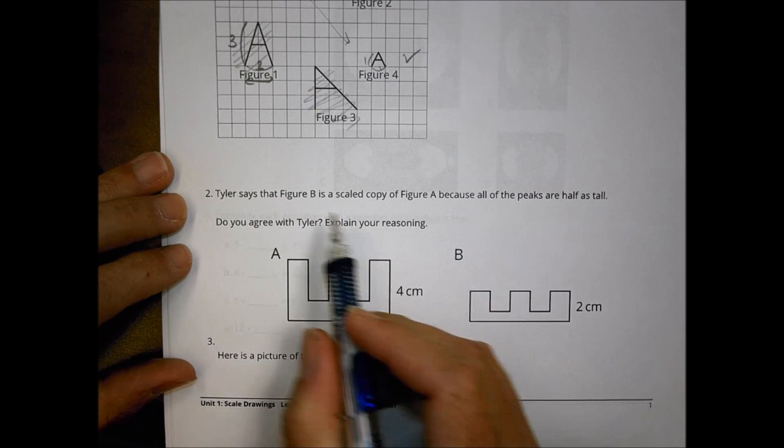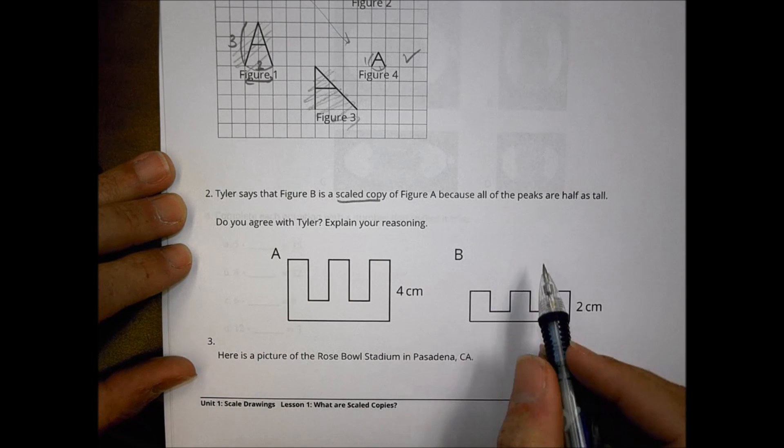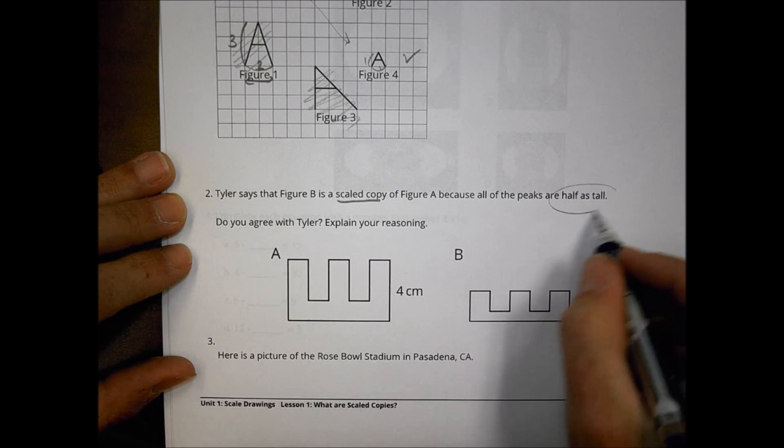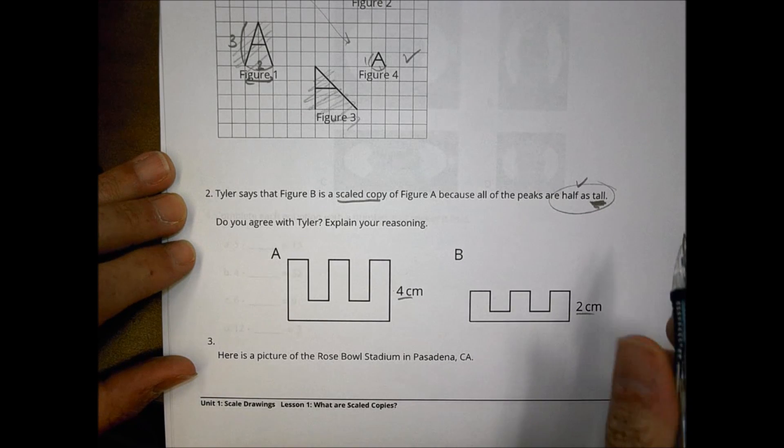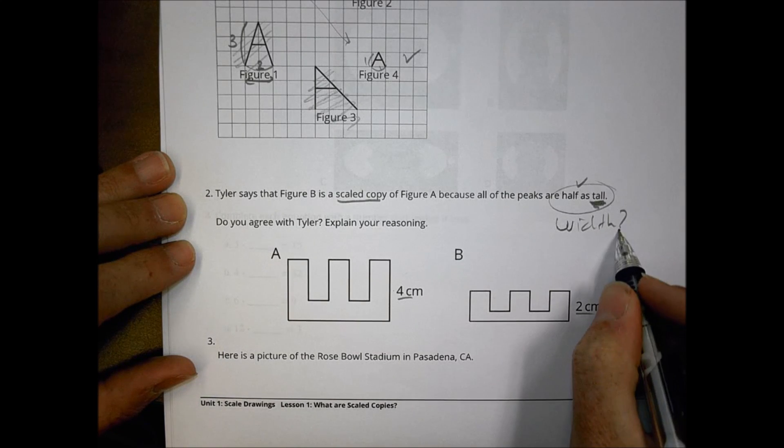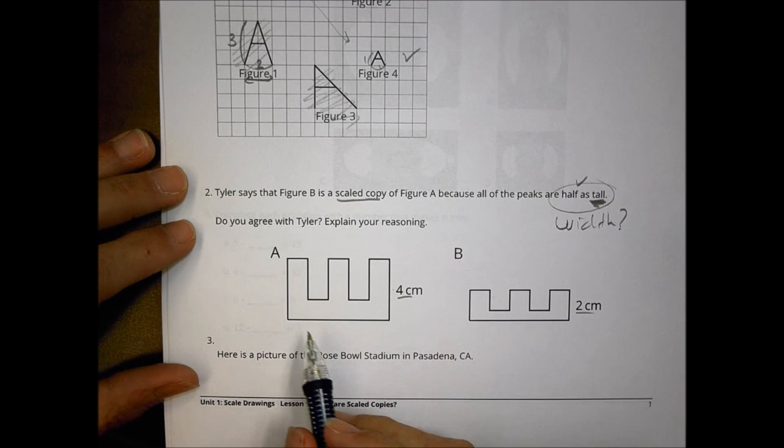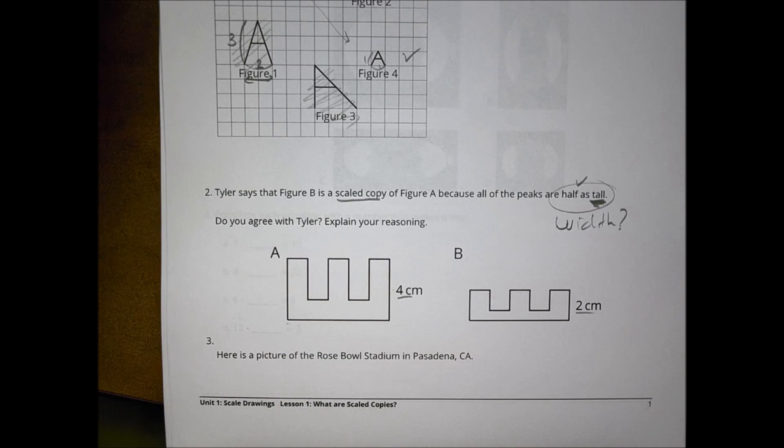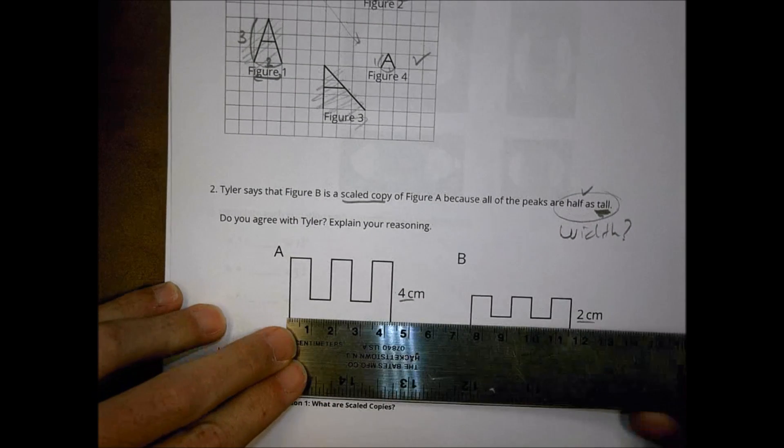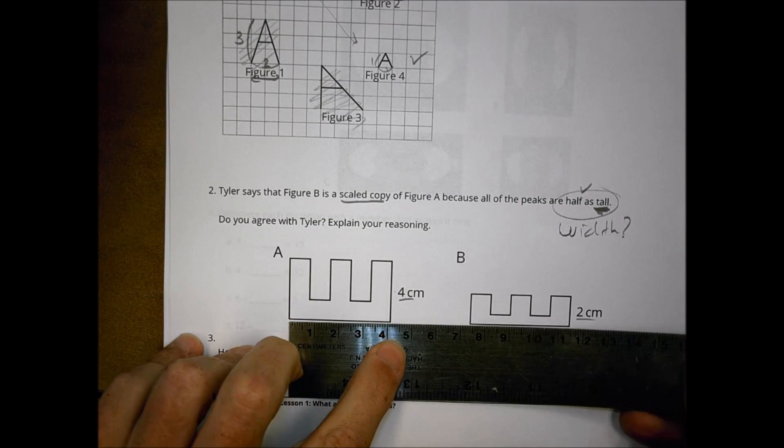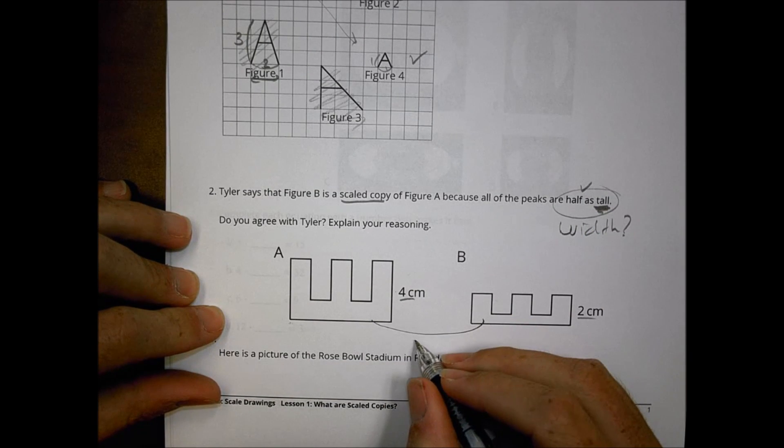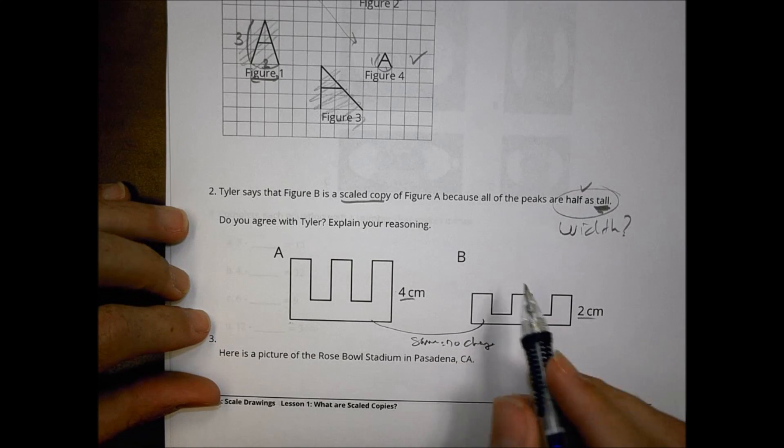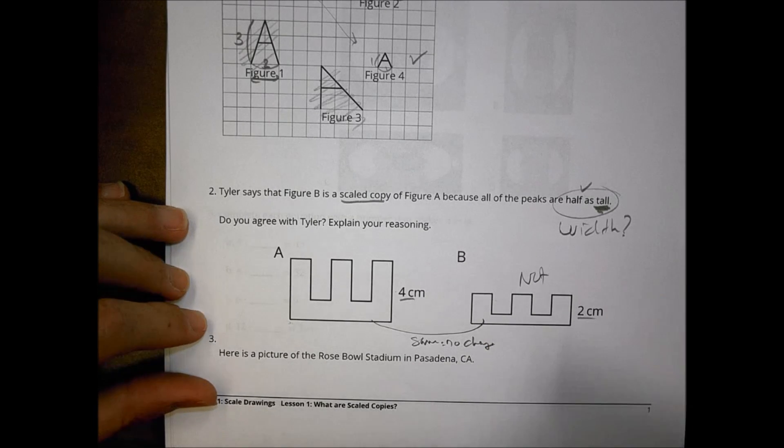Looking at number two down below it says Tyler says figure B is a scaled copy of figure A because all the peaks are half as tall. Well I like what he's saying about the half as tall part because it does go from four to two. That is half, that's a good way to think about that, but he's only looking at half as tall. Well what about the width? Is the width the same? It's the same proportion? Well let's take a look here. When we look at this one we can see that it is just about that long there so it's not super long. If I got a little ruler out here let's see if I get one on my desk here. I would notice that it's about four centimeters long. Well did this reduce down about two? Nope it's exactly the same. So because these widths are the same and there's no change we could say that nope these are not a scaled copy. Does that make sense there? Hopefully that does a little bit.